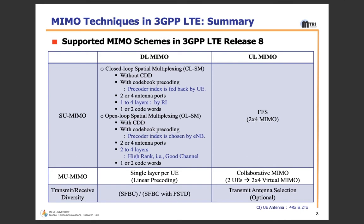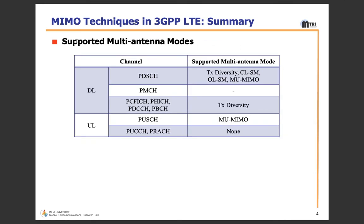There are different channels like PDSCH, PMCH, PCFICH, and others — I'll explain each acronym in detail since I'll be using them frequently. PDSCH stands for Physical Downlink Shared Channel. In LTE, the Downlink Shared Channel (DL-SCH) is a transport channel used for transmission of user data, dedicated control, user-specific higher-layer information, and downlink system information. The PDSCH is the physical channel that carries the DL-SCH coded data.